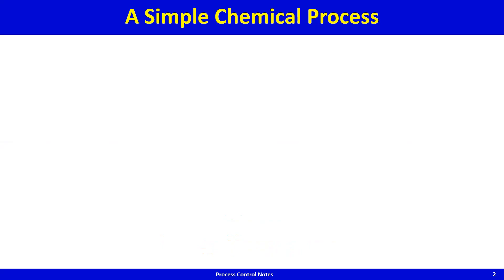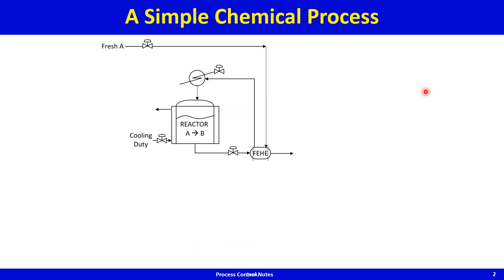Let us look at a very simple chemical process. You have cold fresh A feed getting preheated in a feed-effluent heat exchanger, where the cold fresh feed stream exchanges heat with the hot reactor effluent stream. The reactor effluent stream cools down, the cold feed heats up. This preheated feed is then sent to a heater driven by steam as the utility heating fluid, so the cold feed is heated to the reactor temperature.